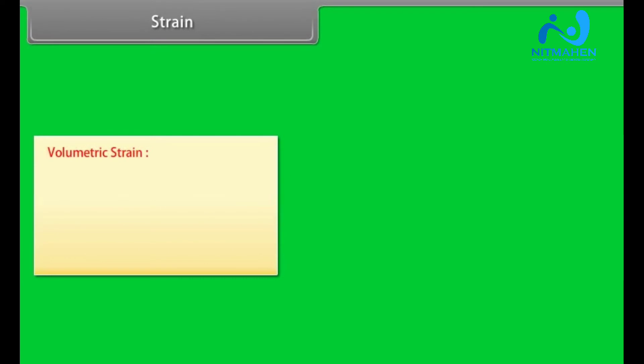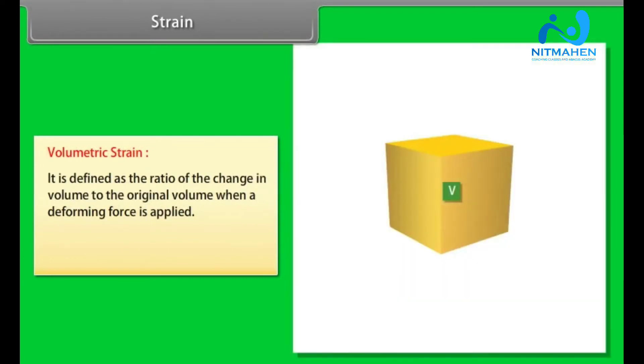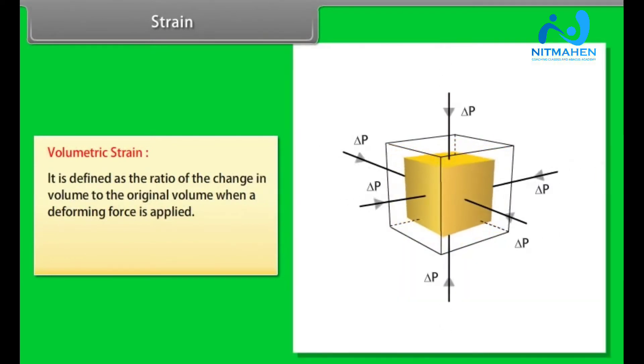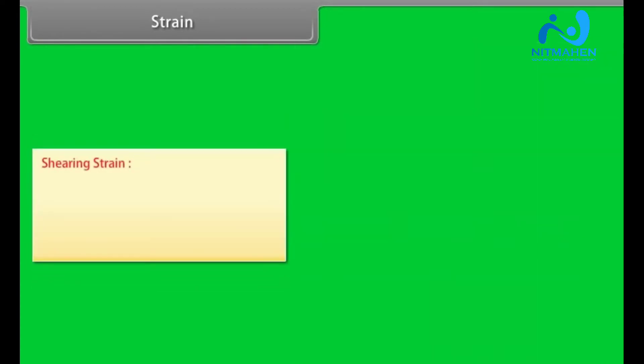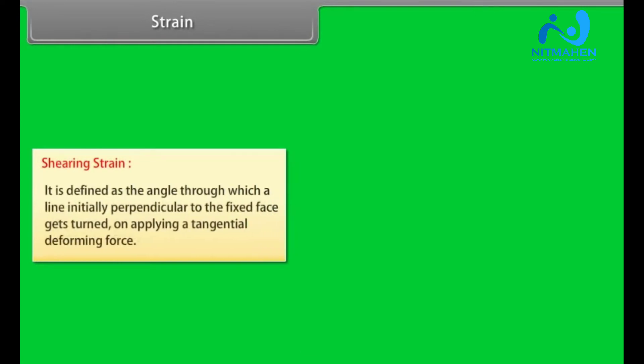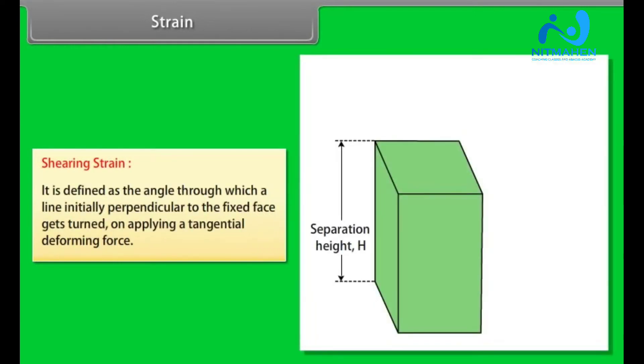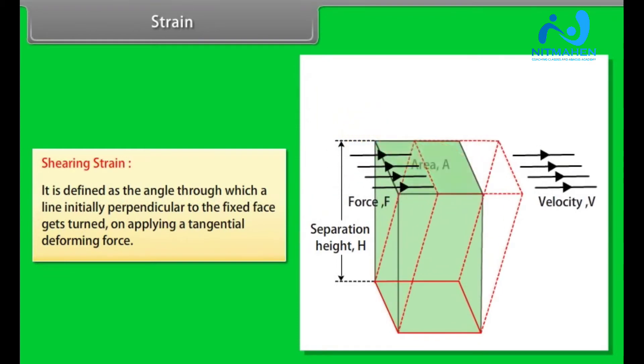Volumetric strain is defined as the ratio of the change in volume to the original volume when a deforming force is applied. Volumetric strain is equal to minus ΔV by V. Shearing strain is defined as the angle through which a line initially perpendicular to the fixed face gets turned on applying a tangential deforming force.